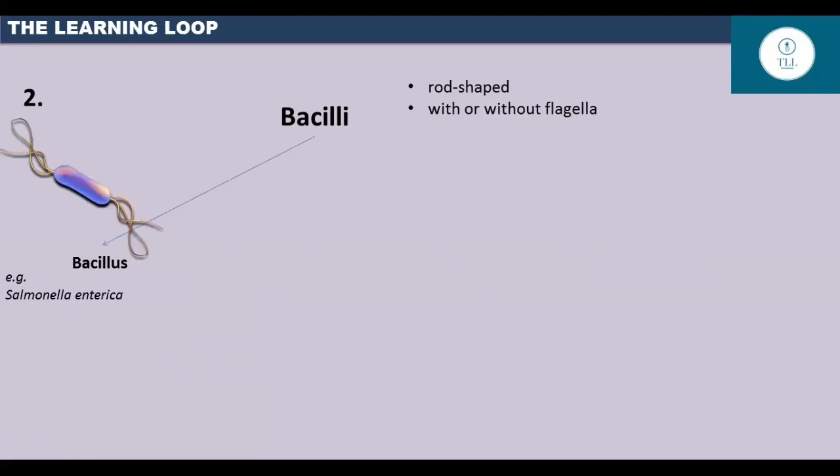First one is the bacillus. They occur as single rod-shaped cells and they can be pathogenic. For example, salmonella enterica causes gastroenteritis, which is a gastrointestinal disorder.